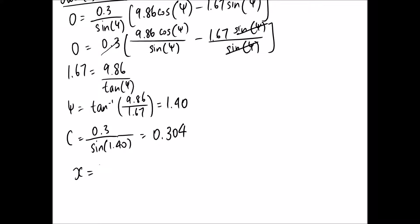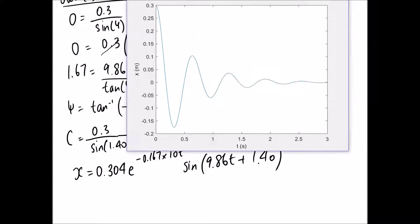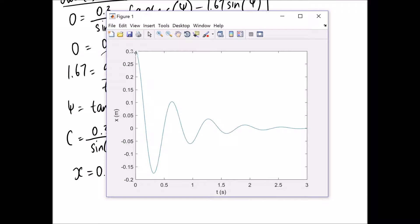Into our equation for x and it comes out to be x equals c which is 0.304 e to the negative 1.67 by 10t sine omega d which was 9.86 t plus psi which was 1.4. So then we can plot it in MATLAB to see what it looks like if we plot x against t and this is what we get. So you can see again it's starting at 0.3 meters which is correct and we have the underdamped case which is the one that's going to oscillate back and forth gradually damping out the motion until it's approaching what it should be which is the equilibrium position of x equals 0. Alright, so that's the answer to that one, see you in the next video.